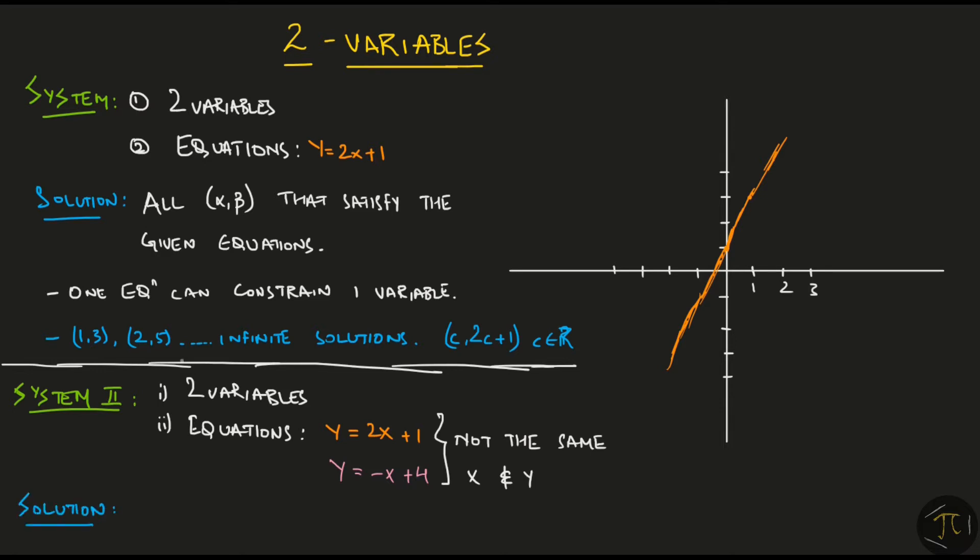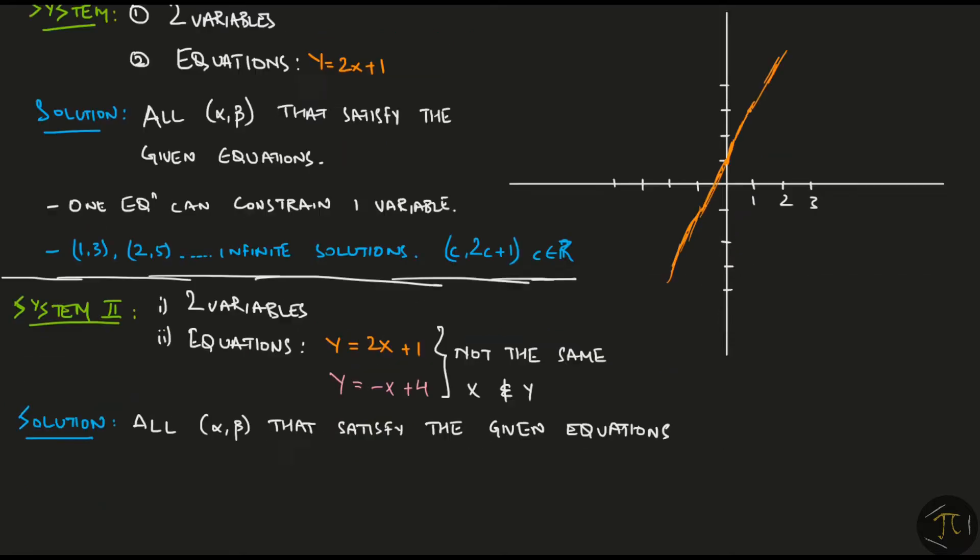The solution to the system is again all the points alpha beta that satisfy the given equations. The common practice for finding this alpha beta is for x and y to play the role of alpha beta. This abuse of notation is convenient, but it is a bit confusing at first. So, for this video, I won't be doing any abusing.